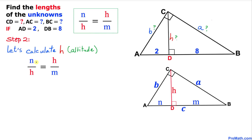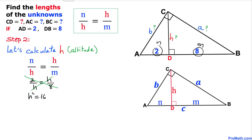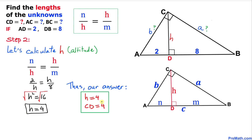Let's fill in the blanks. N is 2 and M is 8, so the proportion becomes 2 over H equals H over 8. Cross-multiplying gives us H squared equals 16. Taking the square root on both sides, we get H equal to positive 4. So our altitude CD turns out to be 4.